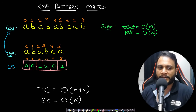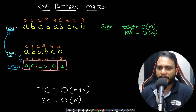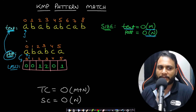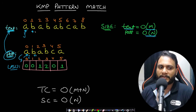Now let's find the pattern in the given text. The LPS array is calculated for the pattern — already pre-calculated as before. I take the text of size m and pattern of size n, and use a j pointer on the text and i pointer on the pattern. If they match, I move both forward. This is the KMP string matcher. Matching 'B' with 'B' — matching, move forward. 'A' and 'A' — matching, move forward. 'B' and 'B' — matching, move forward.